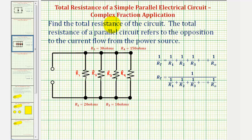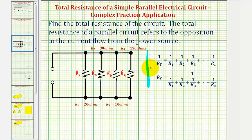Welcome to an application of a complex fraction. We want to find the total resistance of a given parallel circuit, where the total resistance refers to the opposition to the current flow from the power source. There are two formulas that we can use to find the total resistance, and the formulas are equivalent, just in different form.